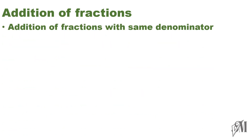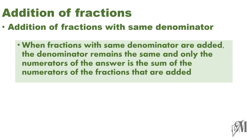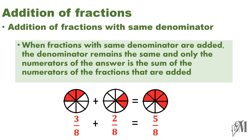Under this topic, the first section is addition of fractions with the same denominator. Remember, when fractions with the same denominators are added, the denominator does not change but the sum of the numerators will be the answer. Simply remember, we have to add the numerators. Here, 3 over 8 plus 2 over 8 is equal to 5 over 8. It is clear that 8, which is the denominator, does not change, but 3 plus 2 is considered and 5 is taken as the numerator of the answer.